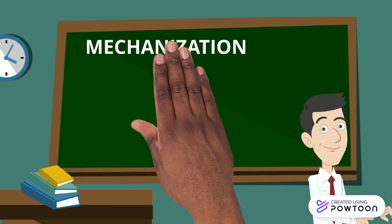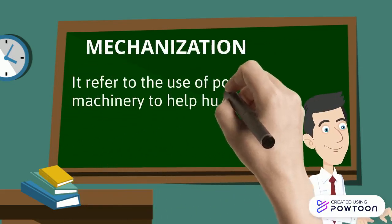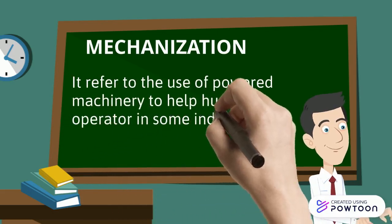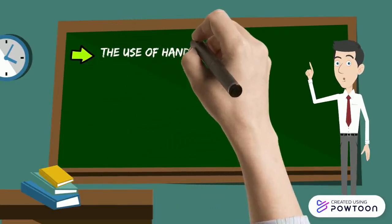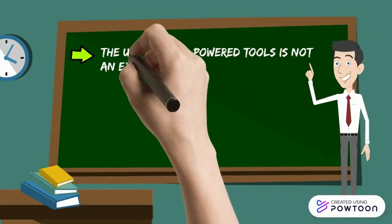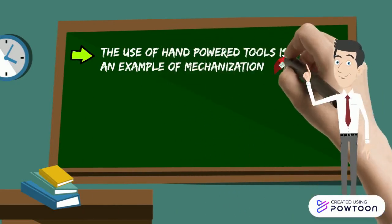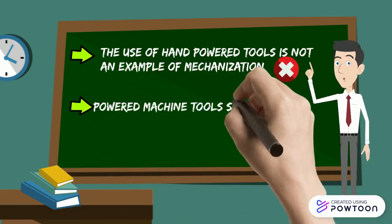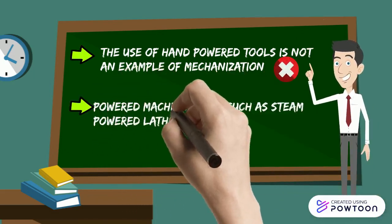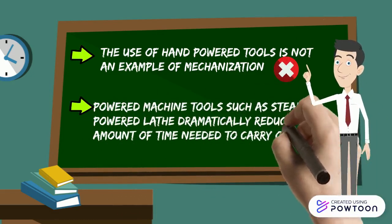Starting with mechanization in manufacturing industries, it is referred to as the use of powered machinery to help human operators in industrial work. The use of hand-powered tools is not an example of mechanization. Powered machine tools such as steam-powered blades dramatically reduce the amount of time needed to carry out various tasks and improve productivity.